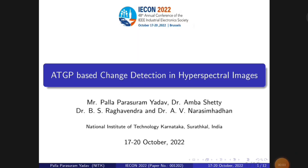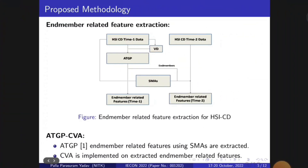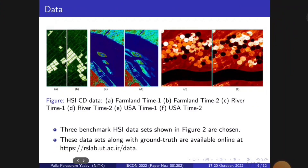I work on hyperspectral image analysis and one of its main applications is change detection. Instead of using only pixel-level features, image-level features are proposed for this study. Endmembers extracted by ATGP are explored to identify image-level features to detect changes from three benchmark change detection datasets.